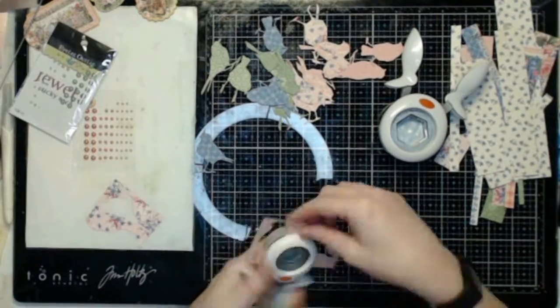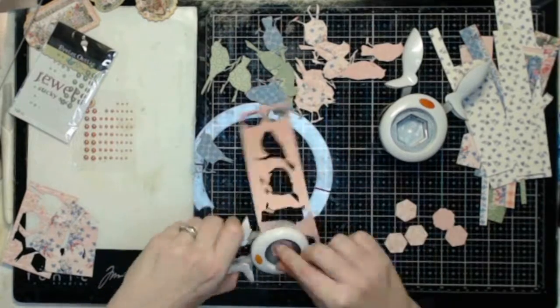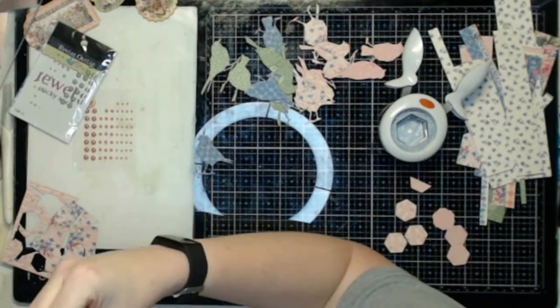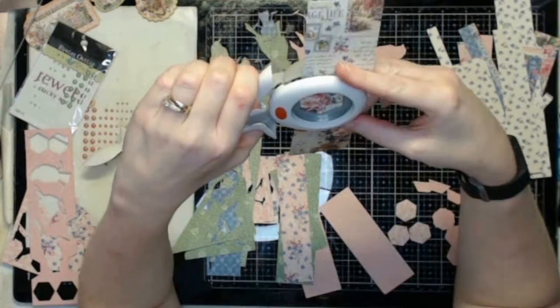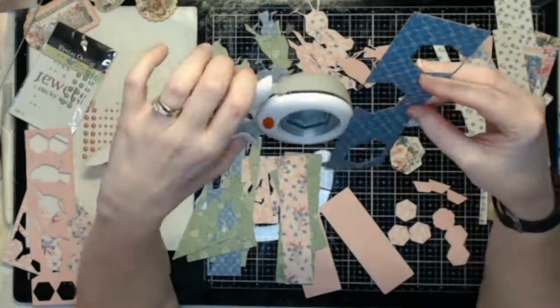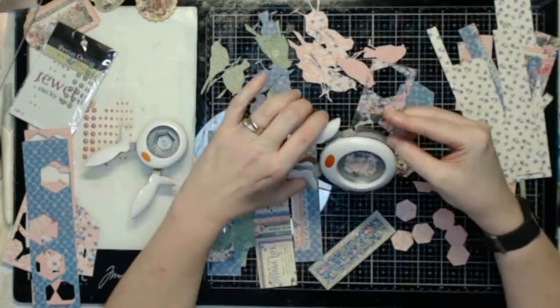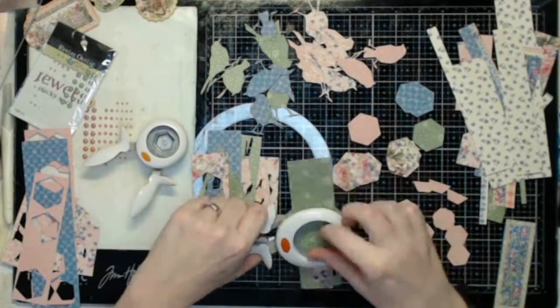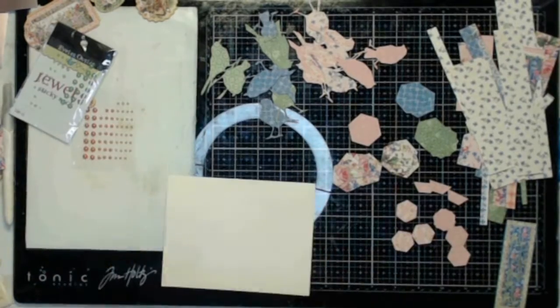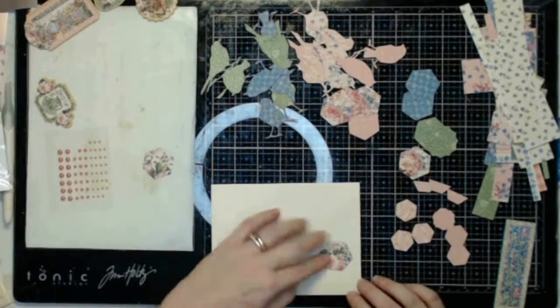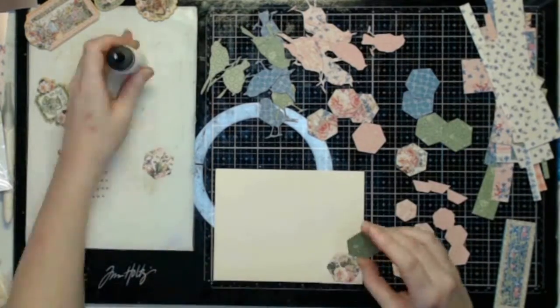For my fourth and final card example, I used some Tim Holtz bird dies, the bird silhouette dies, cut out a bunch of the birds, and then came in and just used my hexagon punches, one and a half inch and one inch, just to kind of punch as many hexagons out of the scrap pieces that I had. I don't end up using the little ones at all, but I do use those large hexagons, and I just kind of spread them out across the front of my card.